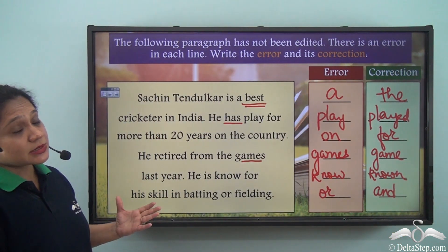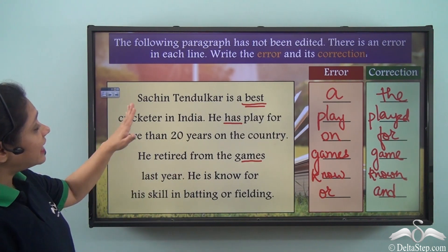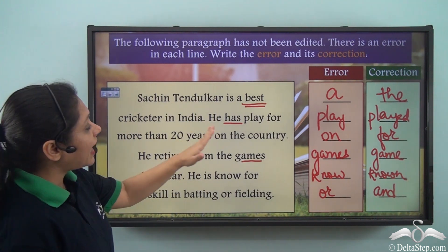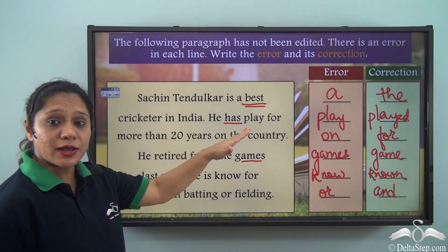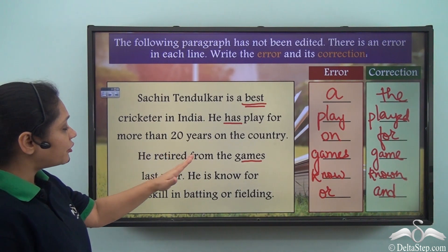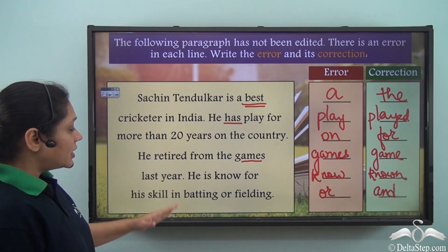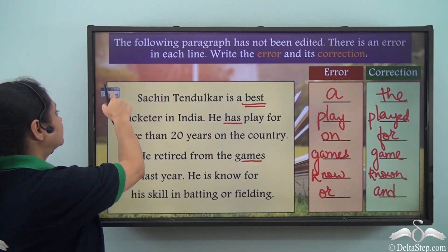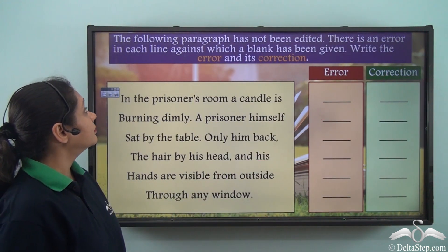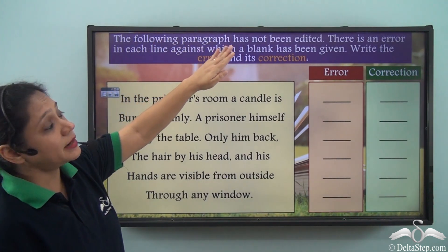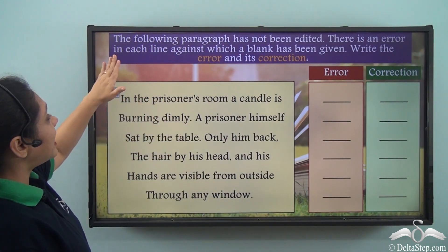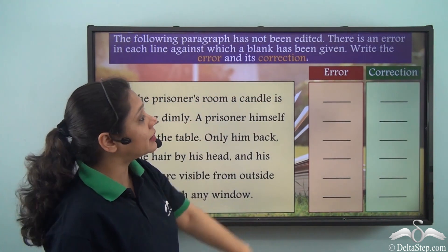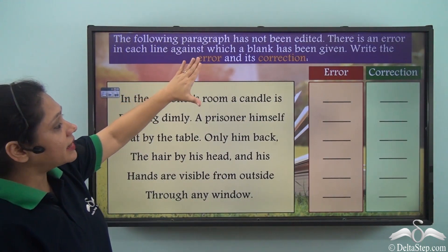So the correct paragraph should read: Sachin Tendulkar is the best cricketer in India. He has played for more than 20 years for the country. He retired from the game last year. He is known for his skill in batting and fielding. The following paragraph has not been edited — there is an error in each line against which a blank has been given. Write the error and its correction.